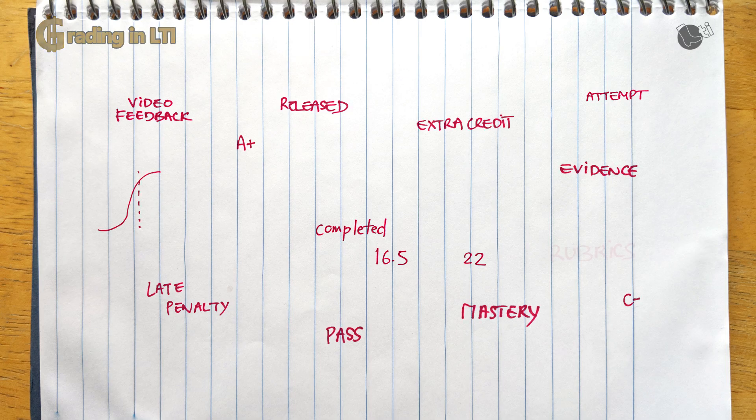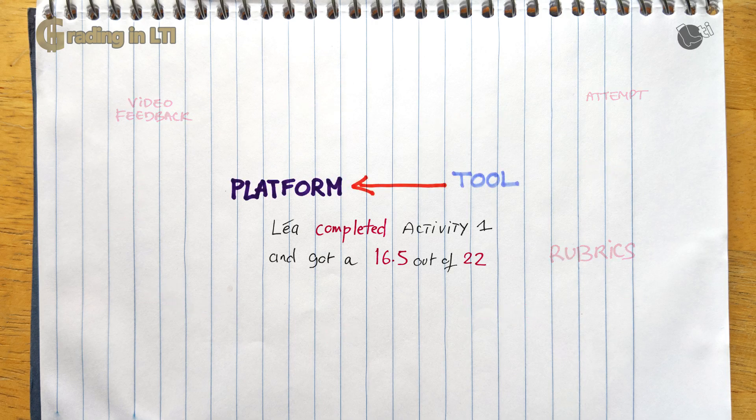As the goal of LTI is interoperability, the grading API known in LTI Advantage as the assignment and grade service has at least in its first version focused on the bare minimum, grades as points earned versus points possible.